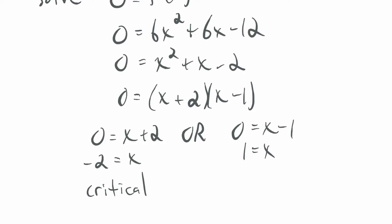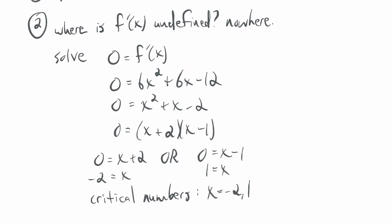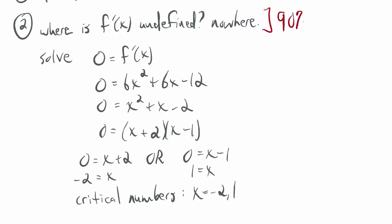My critical numbers are x = -2 and x = 1. An important concept to review: 90–95% of the time, looking for where the derivative is undefined will get you nothing, especially with the kinds of functions we'll be dealing with — but not all the time. So it's really important to consider this possibility every time you do one of these problems. You would have to consider it to find out if you got something or not.